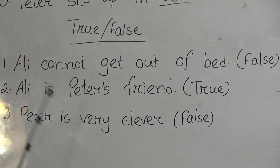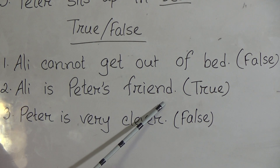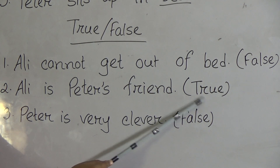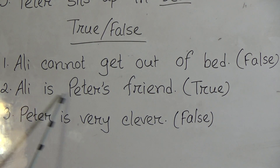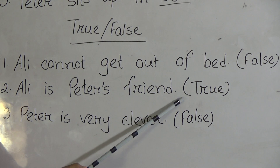Number 2: Ali is Peter's friend. This is true. Ali is Peter's friend — true.